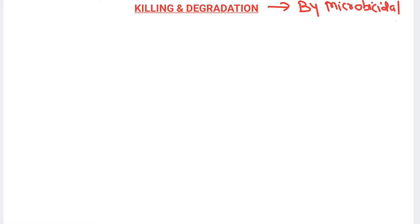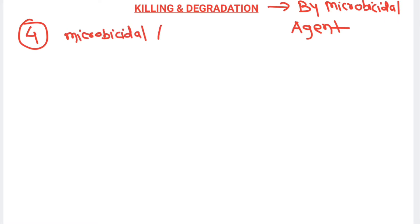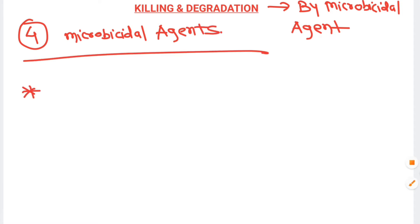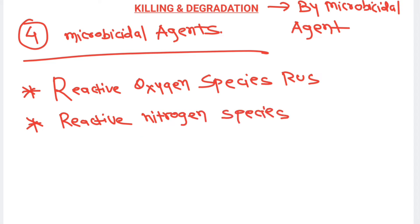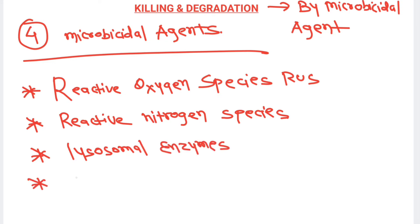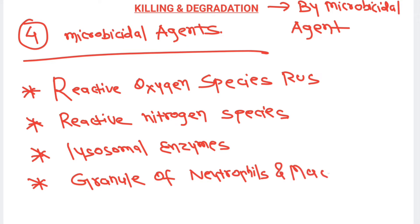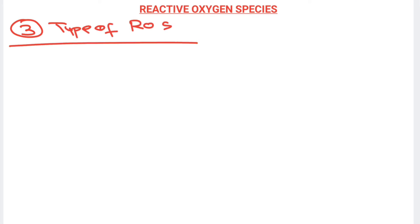After engulfment, the third and final step is killing and degradation, carried out by microbicidal agents. There are four main microbicidal agents: first, reactive oxygen species (also known as free radicals); second, reactive nitrogen species; third, lysosomal enzymes, which are powerful microbicidal substances that effectively kill viruses and bacteria; and fourth, granules of neutrophils and macrophages.